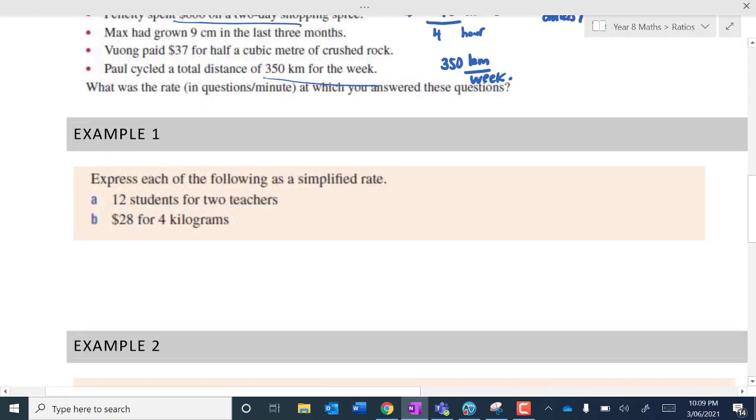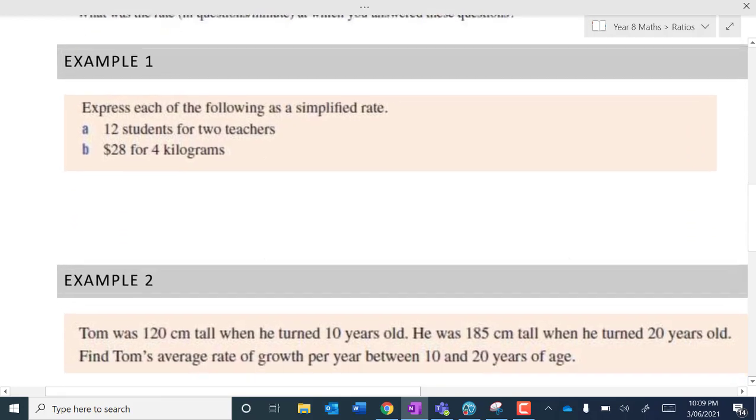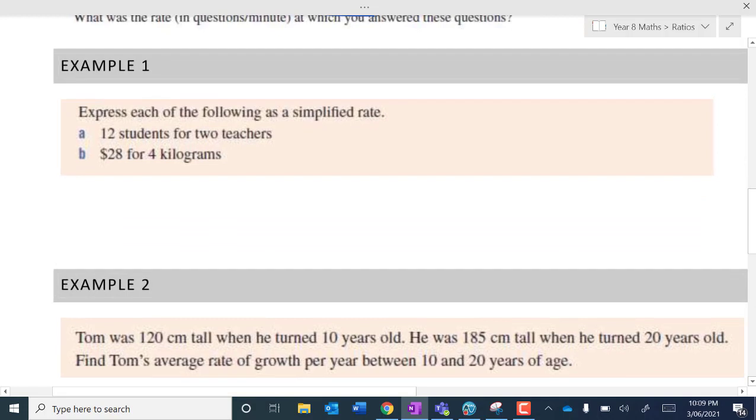And let's have a go. I won't take too much time to go through these. Alright, so I'm going to go through a couple of these and I'll probably get you to do some in a second. But we've got here expressed the following as a simplified rate. So it's like a fraction. We want to simplify fractions. So if I had 12 students for two teachers, then of course let's do 12 students.